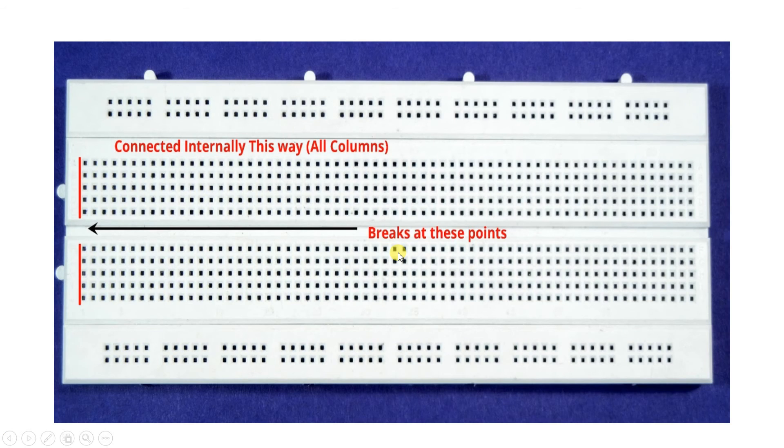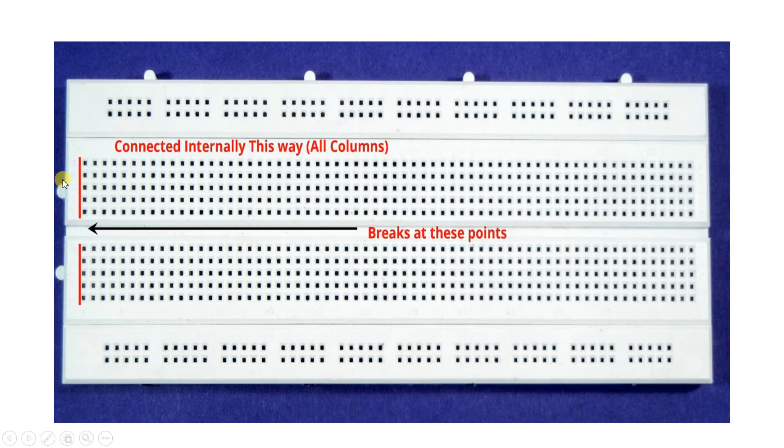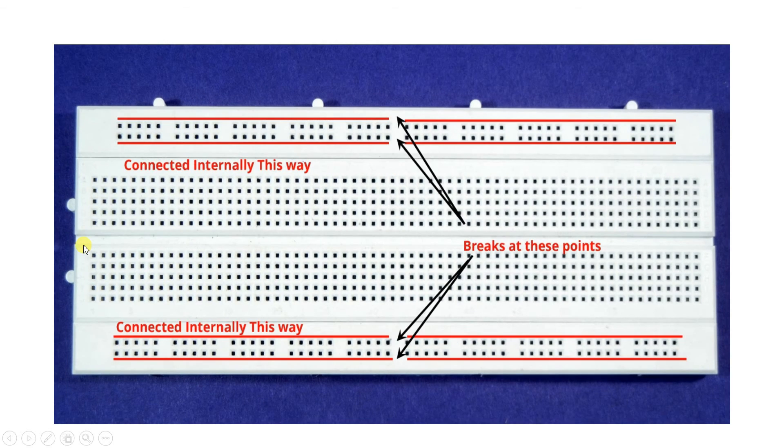The connection has to be made considering these shorts. All these horizontal lines are internally connected this way. The red line shows all of them are interconnected with each other. Similarly, this is parallelly interconnected. The lines arranged in the bottom side of the breadboard are also connected. The vertical lines are also internally connected, and there is a break at this point. So breadboard has vertical shorts and horizontal shorts.